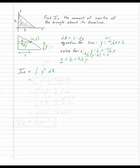My integral now looks like y squared times b minus b over h times y dy, where this is dA. My limits of integration since I'm integrating with respect to y are 0 to h, and I can multiply that out.